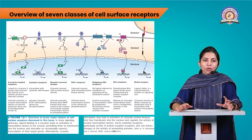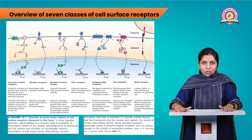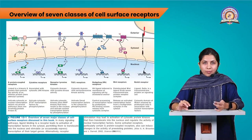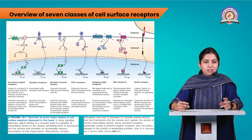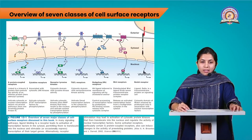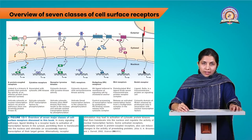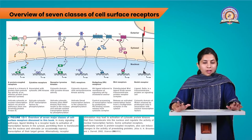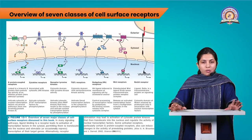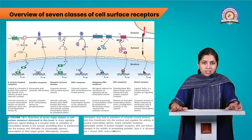Now let us see an overview of the seven classes of cell surface receptors. In today's session, we discussed G-protein coupled receptors and cytokine receptors in detail. Other types of cell surface receptors include receptor tyrosine kinases, TGF-beta receptors, hedgehog receptors, WNT receptors, and NOTCH receptors. Overall, there are seven types of cell surface receptors involved in different types of gene regulation, each with different mechanisms.